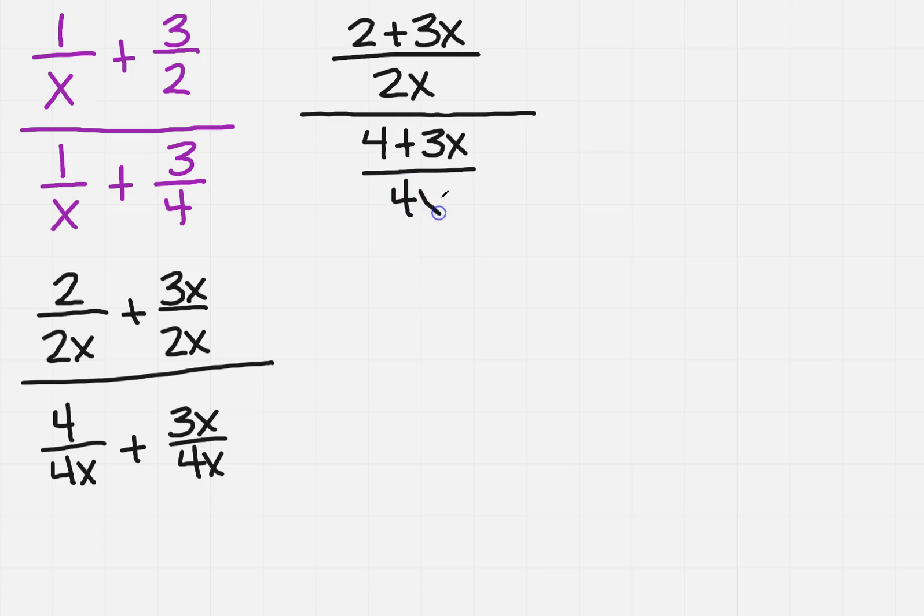Now remember when we divide, we're actually multiplying by the reciprocal. So you can think of this as also looking this way. If this is division you could put a little division sign in here, and then you would have 4 plus 3x over 4x.